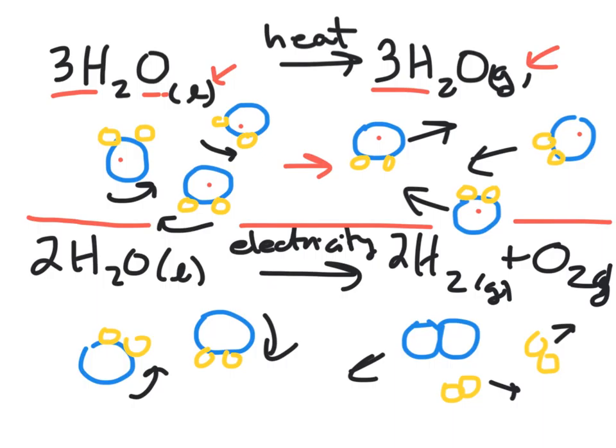That's a physical change. The particles changed position. They got further apart, and they have more freedom of motion, but they did not change bond partners. The Mickey Mouse ears, the little yellow Mickey Mouse ears, are still attached to the blue circles. The hydrogen atoms are still attached to the oxygen in the same way, and so we don't have any new substances.